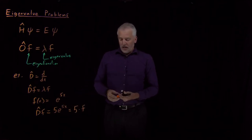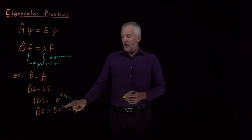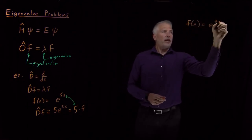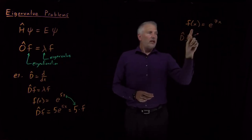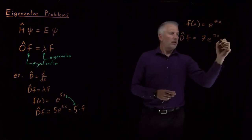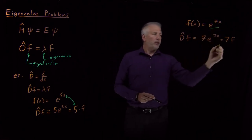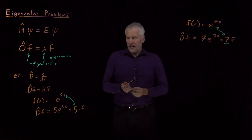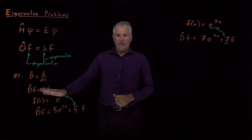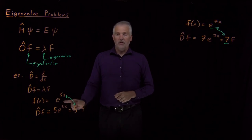So e^(5x) is an eigenfunction and 5 is the eigenvalue — notice those two things are paired. The eigenvalue is the value that comes out when I take the derivative of this particular function. If I use a different function, say e^(7x), then the derivative of e^(7x) is 7e^(7x), so e^(7x) is also an eigenfunction of the derivative operator, with eigenvalue 7. Each eigenfunction comes paired with its own eigenvalue.